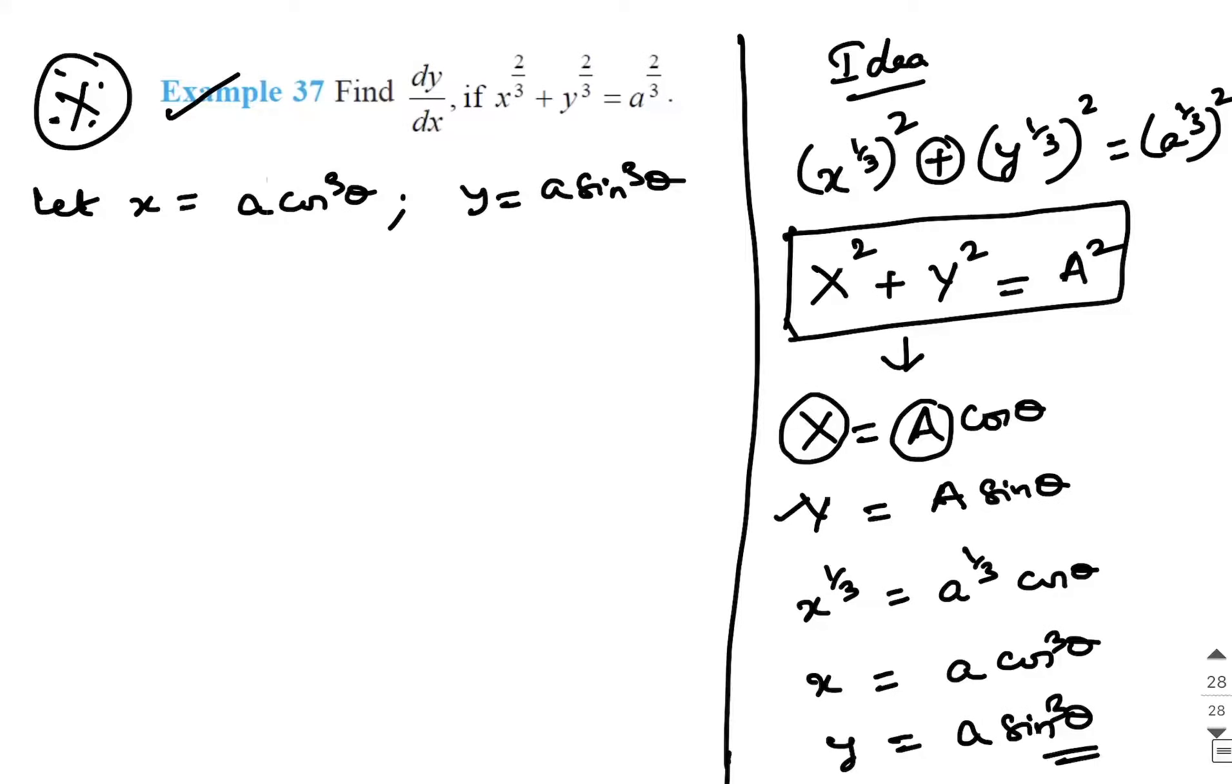Now, we have converted it to the parametric form. To find dy by dx, we will do dx by d theta. So, dx by d theta is A into derivative of cos cube is 3 cos square theta into derivative of cos theta is minus sin theta.